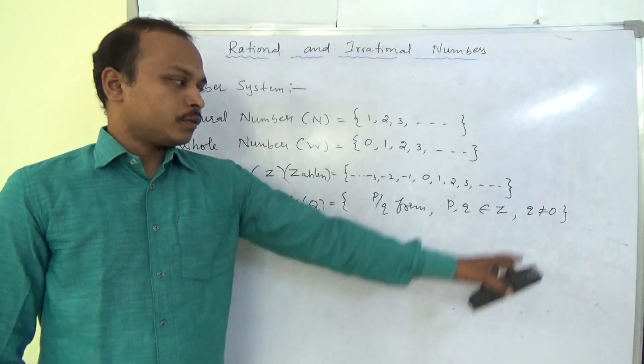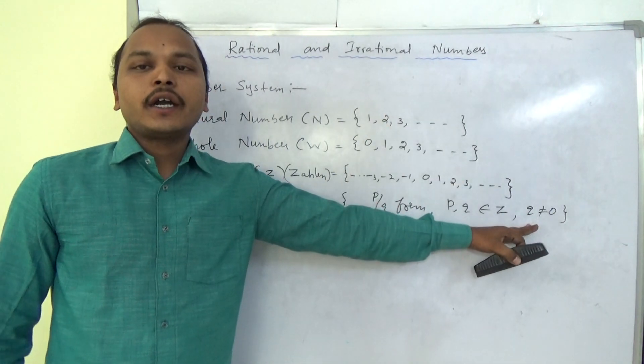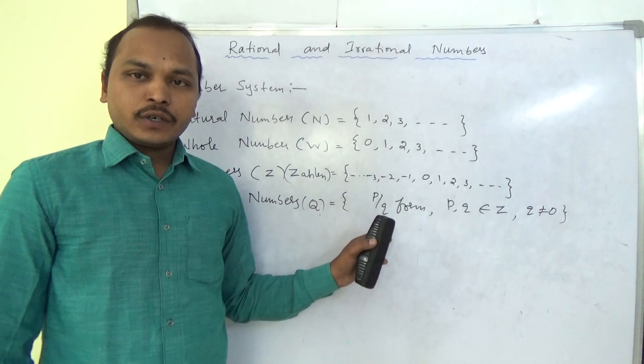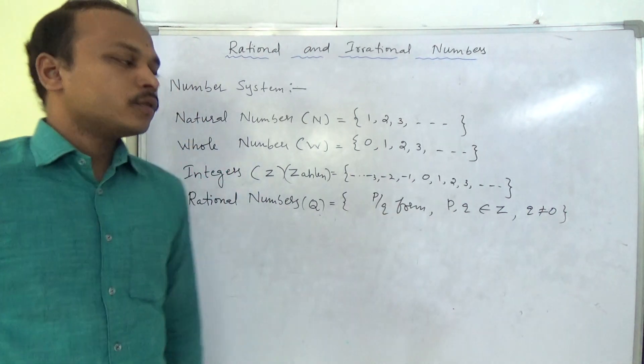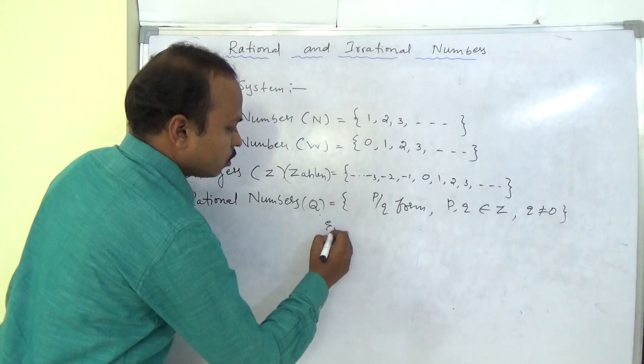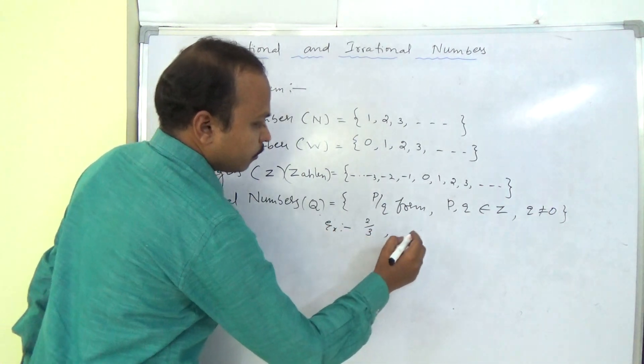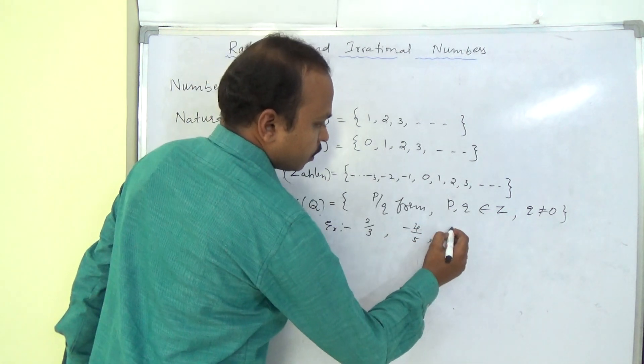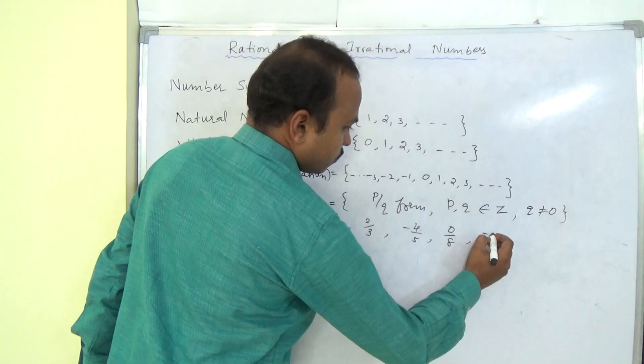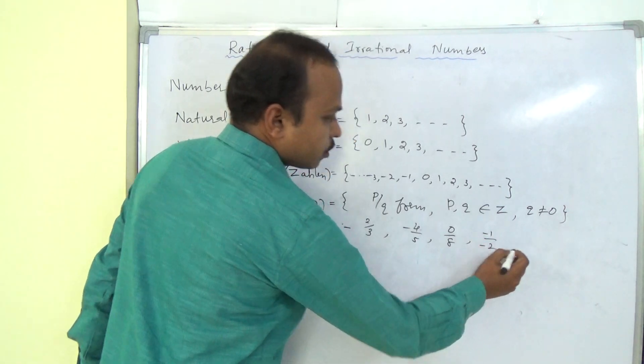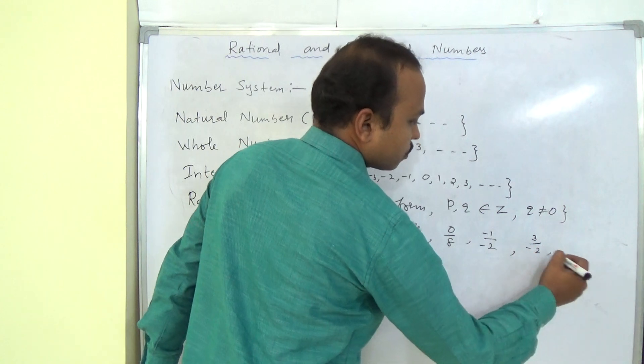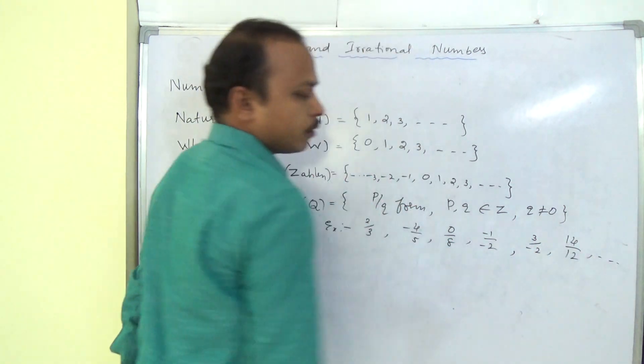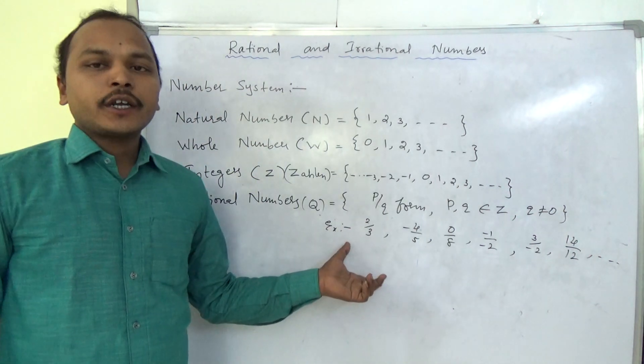So p comma q belongs to integers we will take. And the important thing is q should not be zero. Because something by zero is undefined. p can be zero. Because zero by something is zero itself. p by q form. For example, 2 by 3, minus 4 by 5, 0 by 8, minus 1 by minus 2, 3 by minus 2, 14 by 12, and so on. These are all examples for rational numbers.